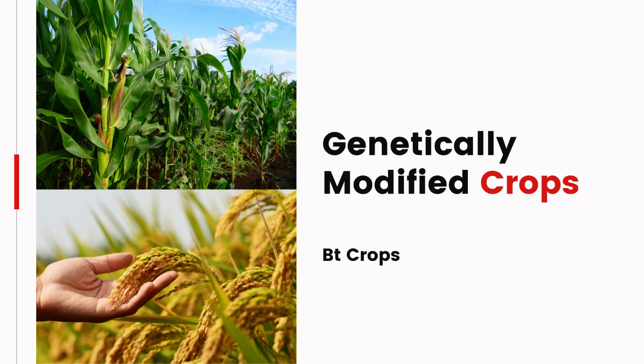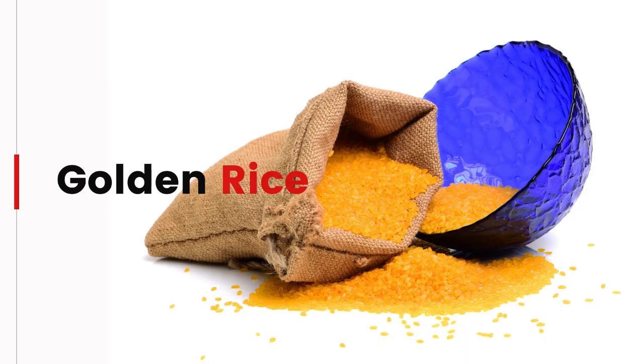Another example are the Bt crops. These crops, such as corn and cotton, have been modified to produce Bacillus thuringiensis (Bt) toxin, which is toxic to certain insect pests, reducing the need for chemical insecticides. Golden rice is a type of rice that has been genetically modified to produce beta-carotene, a precursor of vitamin A, aiming to address vitamin A deficiency, a widespread health issue in many developing countries.